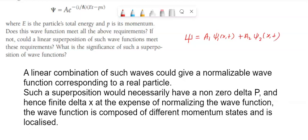Here a1 and a2 are some constants and ψ1 and ψ2 are the normalized wave functions. This is a linear superposition of wave functions. This wave function can be normalizable.